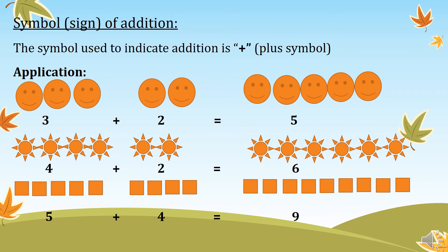To identify the sum of these two groups, we use the symbol of addition which is plus. Then we get three plus two equal to five.